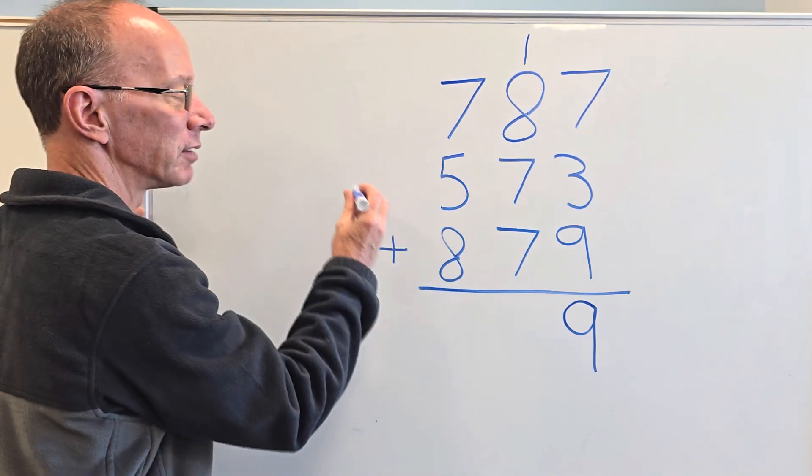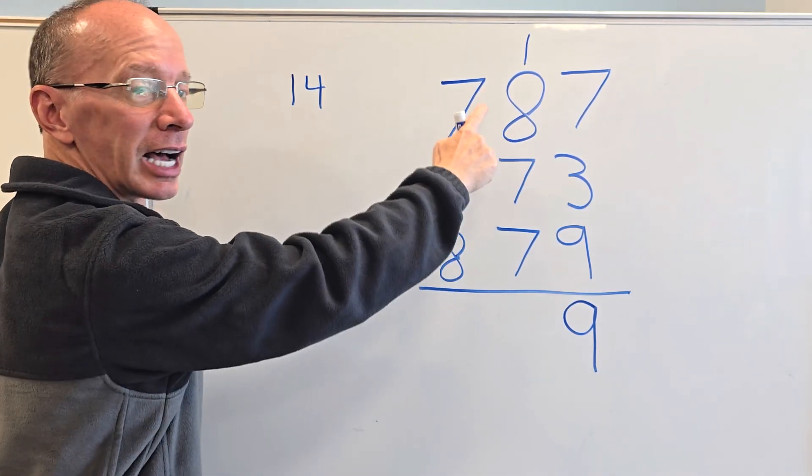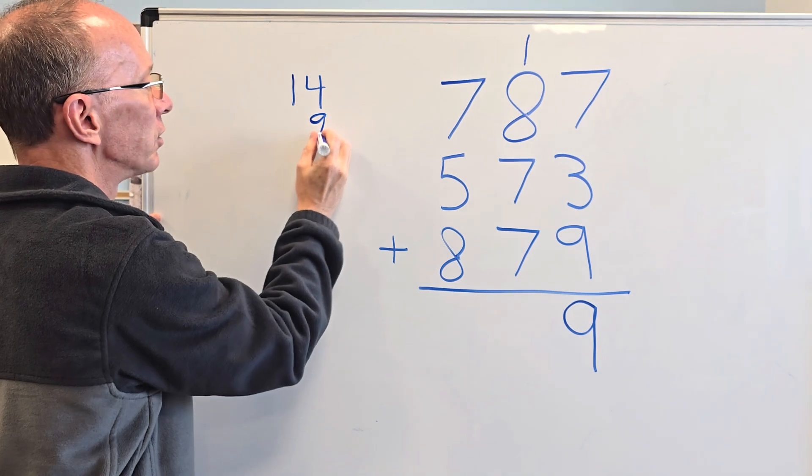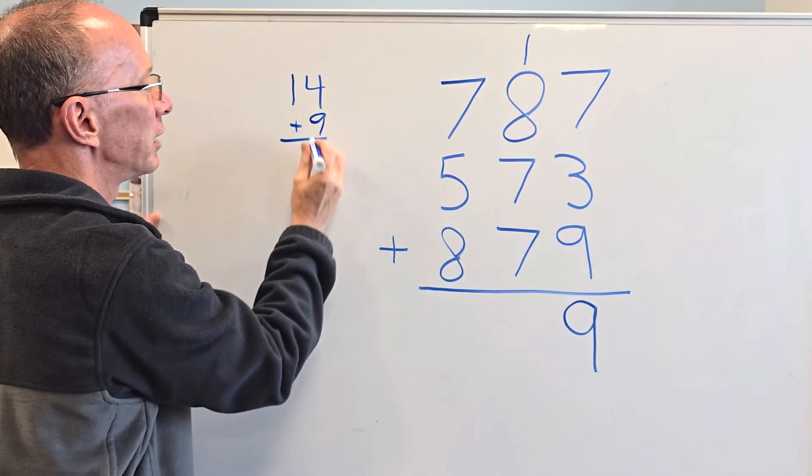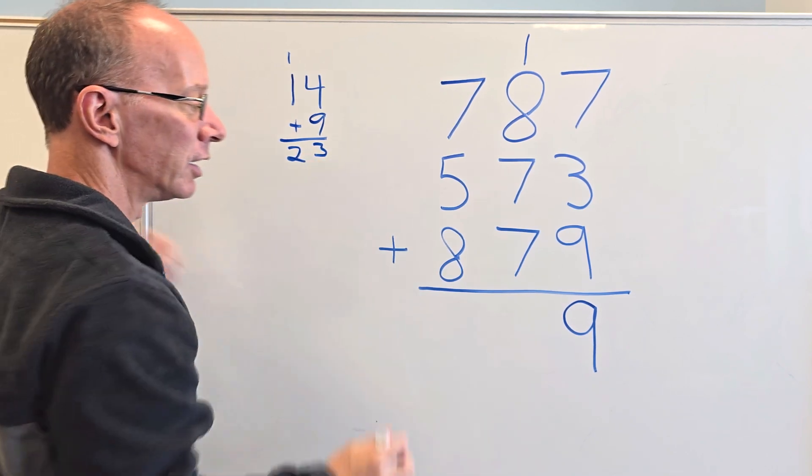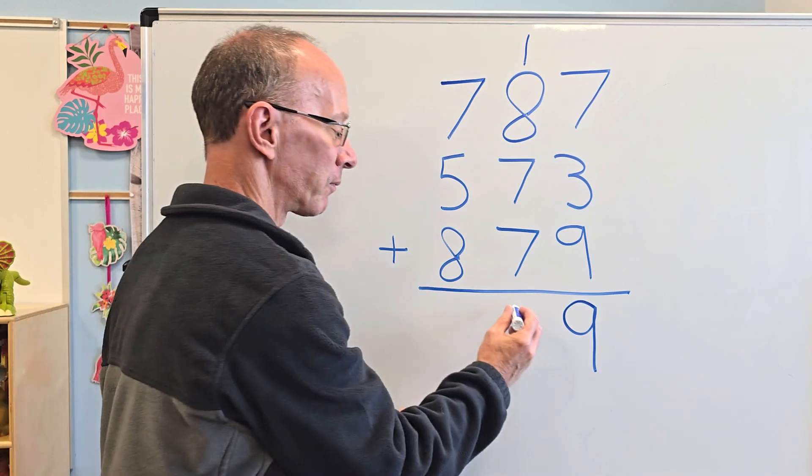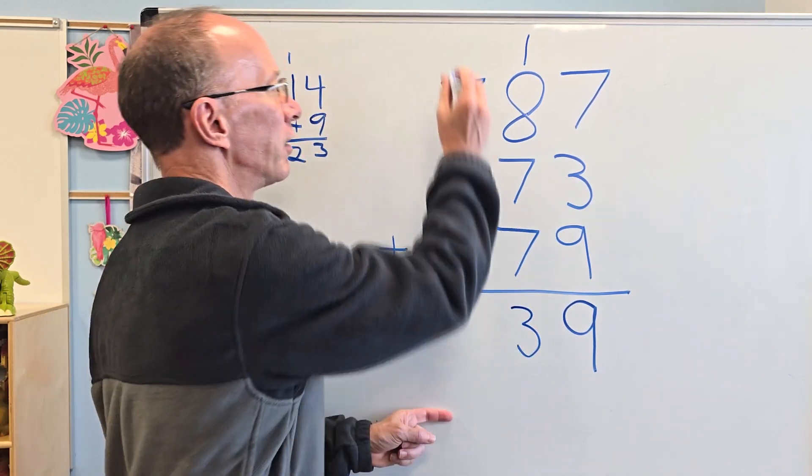So seven plus seven would be 14 right here. And then plus the nine, the eight plus one is the nine. So I can do my little addition here. Nine plus four is 13, carry the one. And then one plus one is two. So my answer would be 23. So I put the three right here. And then I carry the two.